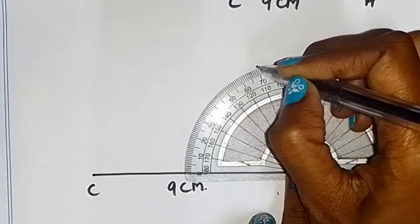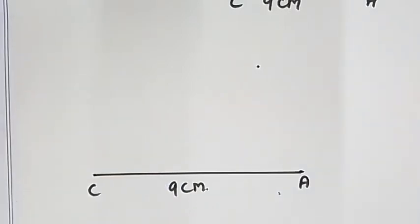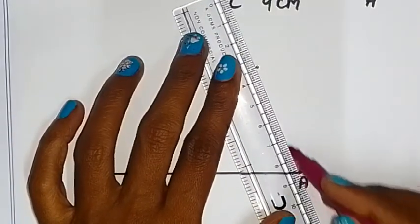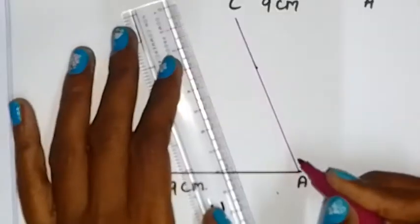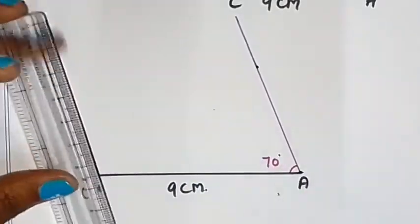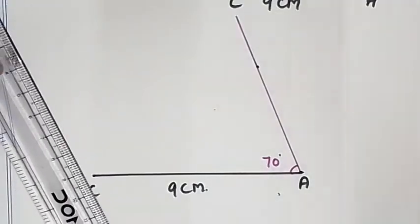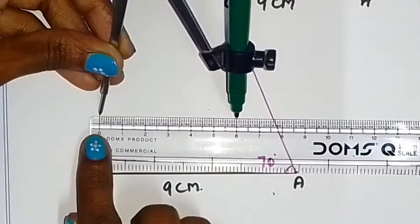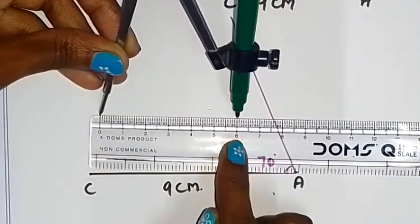So now we have to join. A is 70 degrees, make the acute angle at the point. Now A is 6 cm measurement. 0 is 0 and point is 6 cm measurement.